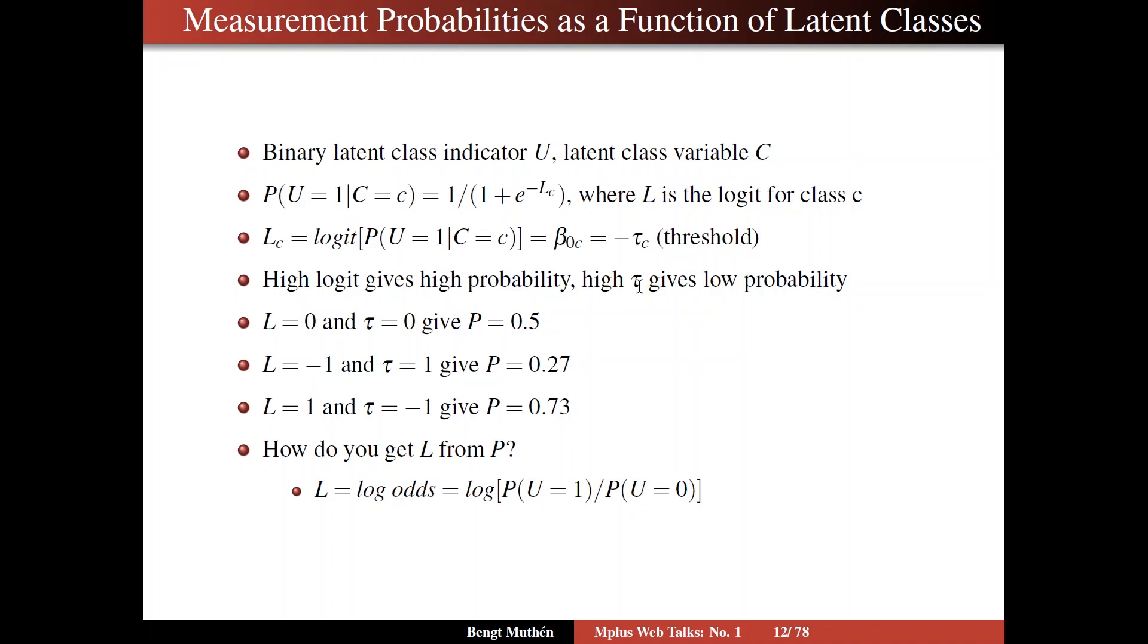So you think of this as high logit giving high probabilities, high thresholds giving low probability. Threshold is something you have to get beyond to get u equals 1. And you know then that when the logit is 0 and when the threshold is 0, they are 0 at the same time, we get probability 0.5, neutral point. Low logit, high threshold gives a low probability. High logit, low threshold gives a high probability.